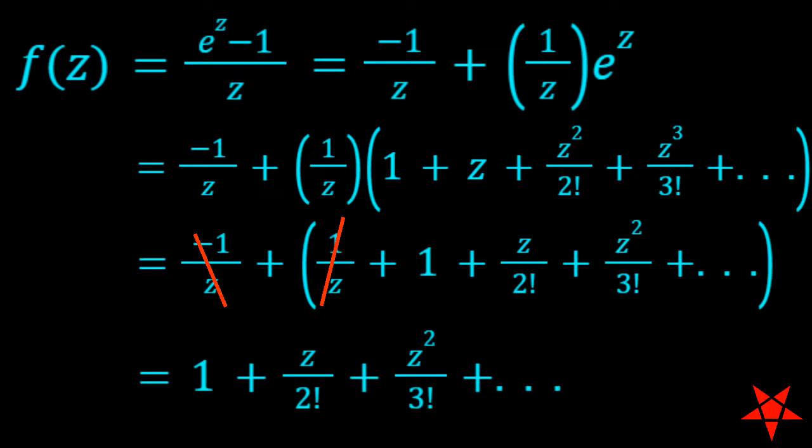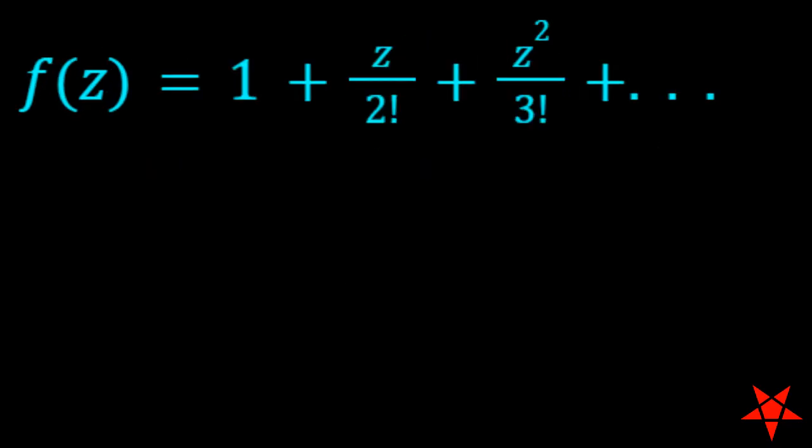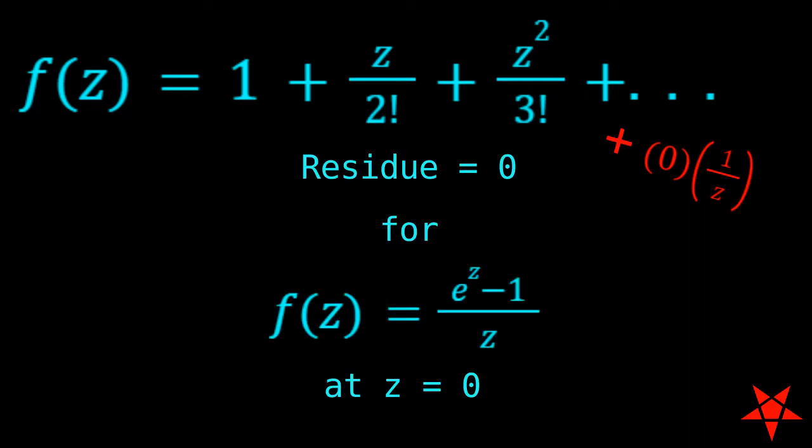At this point, we have Laurent series. However, it doesn't have any components in its principal part. However, we can add 0 times 1 over z to the expression. Thus, the residue for e to the z minus 1 over z at z equals 0 is 0. To be clear, we still have a singularity at z equals 0, but with all of the coefficients for the principal part being 0, we refer to it as a removable singularity.